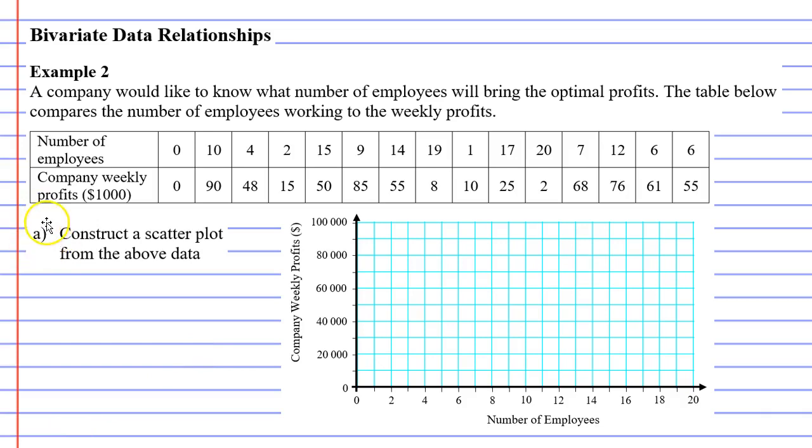We'll start with question A: construct a scatter plot from the above data. We work along one column at a time. Looking at the first column, we've got the point zero, zero, which when we mark it's right down here at the origin.